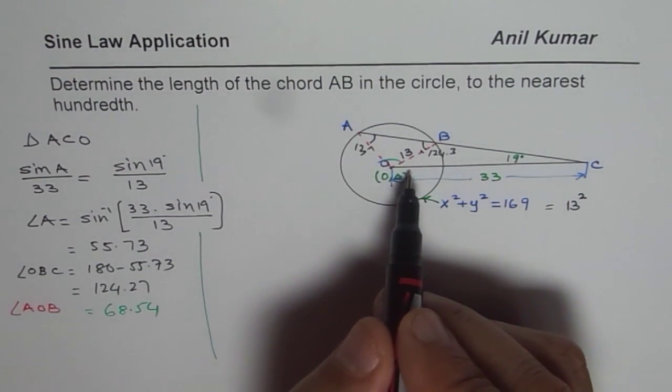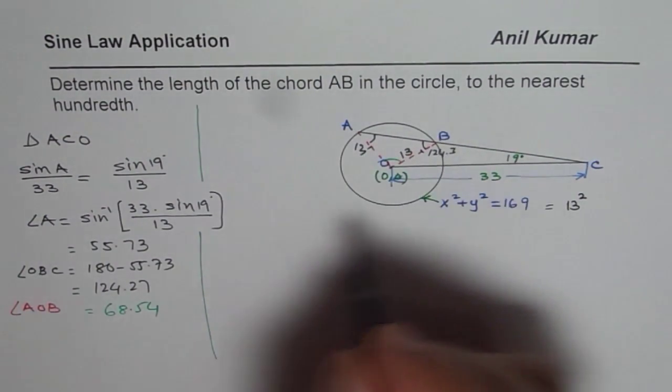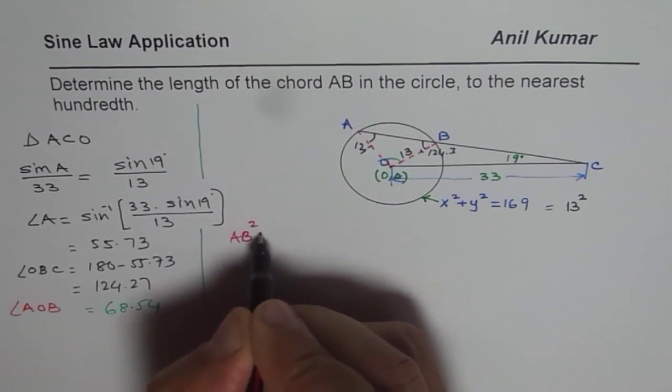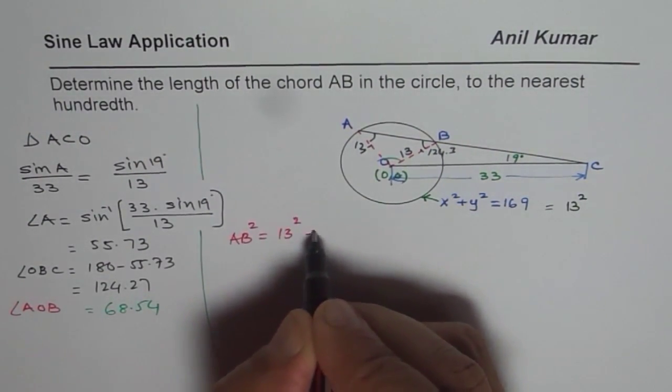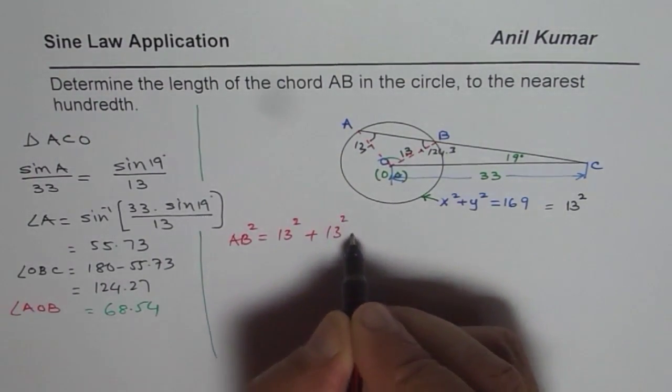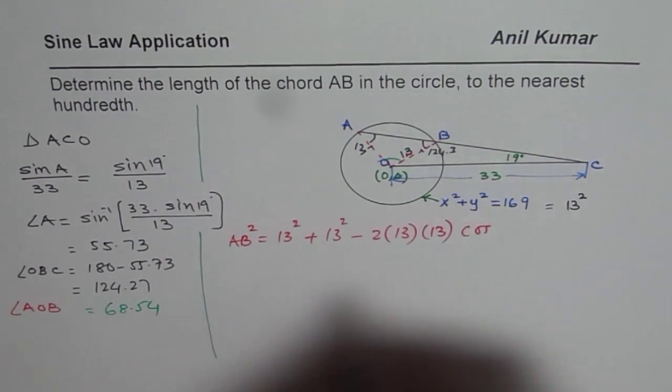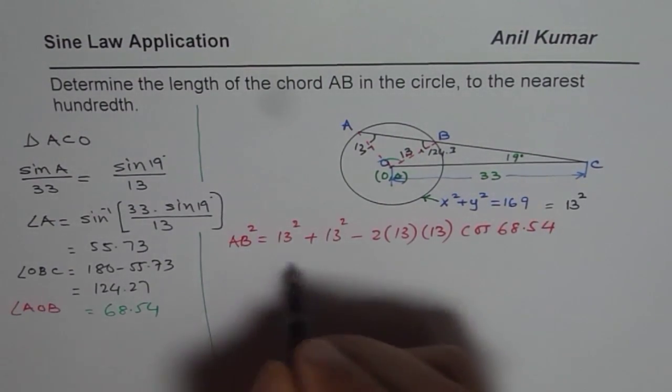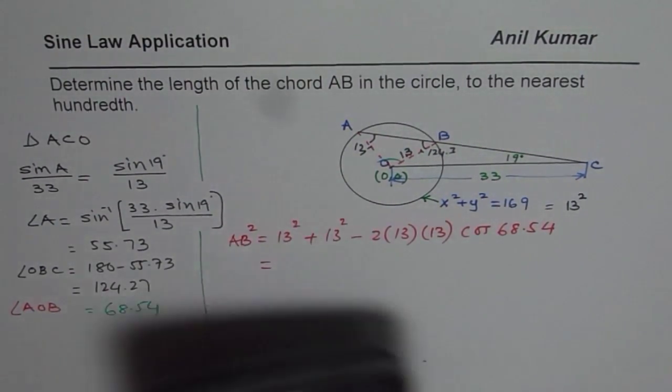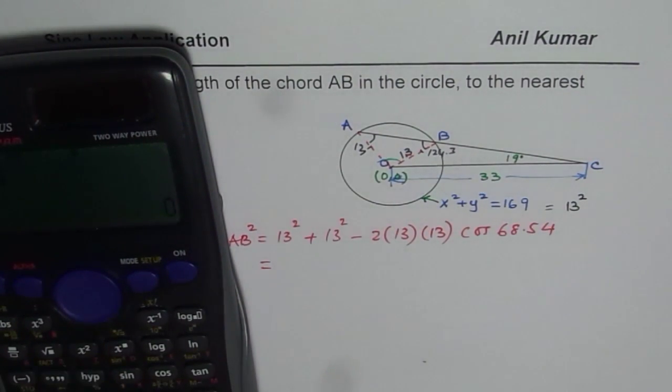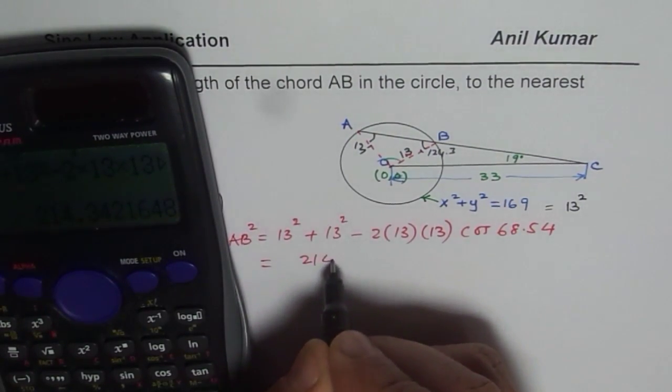So in our case, we will use cosine law to find the length AB. So we know AB square is equals to 13 square using cosine law plus 13 square the other side minus 2 times 13 times 13 times cosine of the angle included which is 68.54. So let us calculate this value. So this value is 13 square plus 13 square minus 2 times 13 times 13 times cos of 68.54, bracket close, equals to. So we get 214.34.